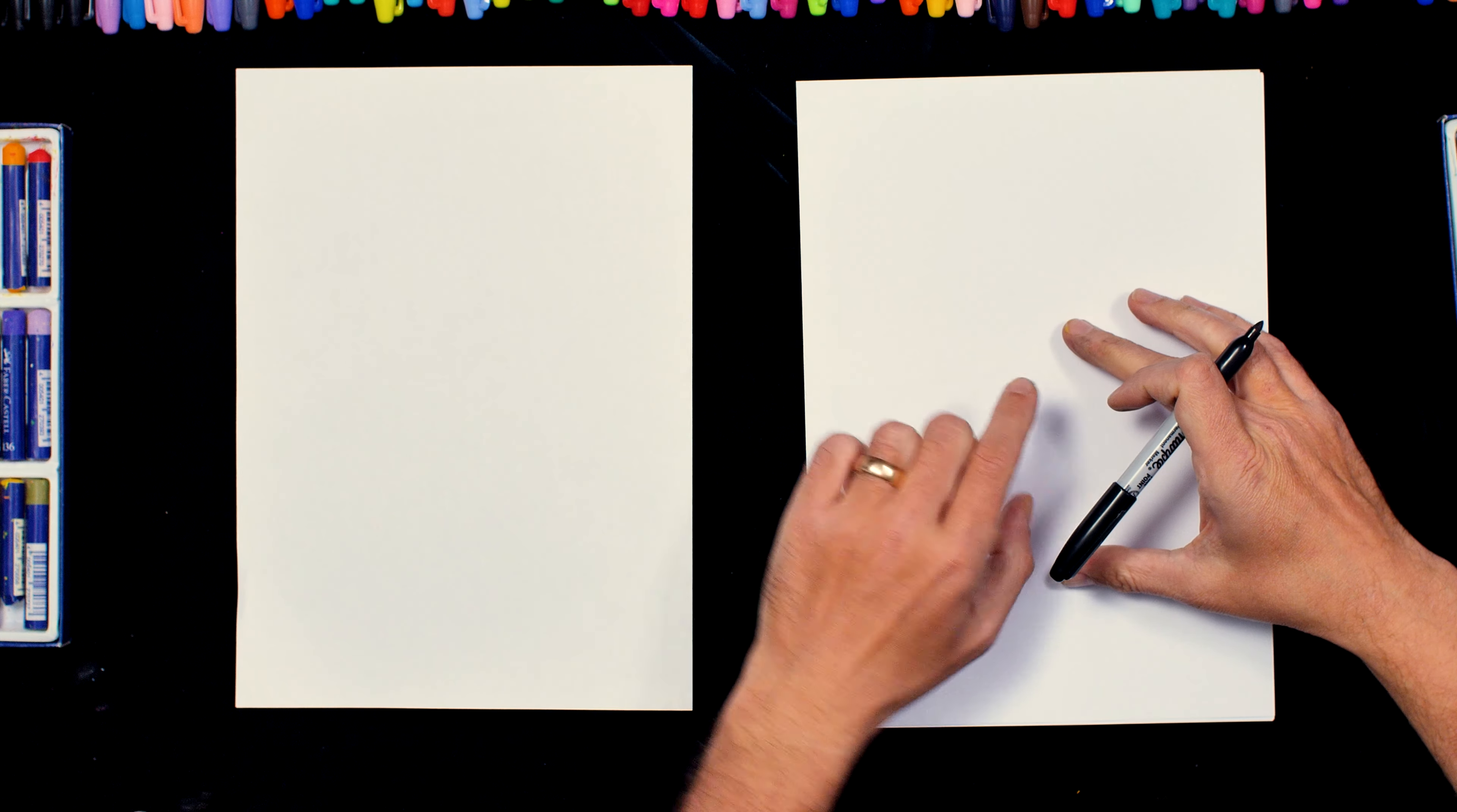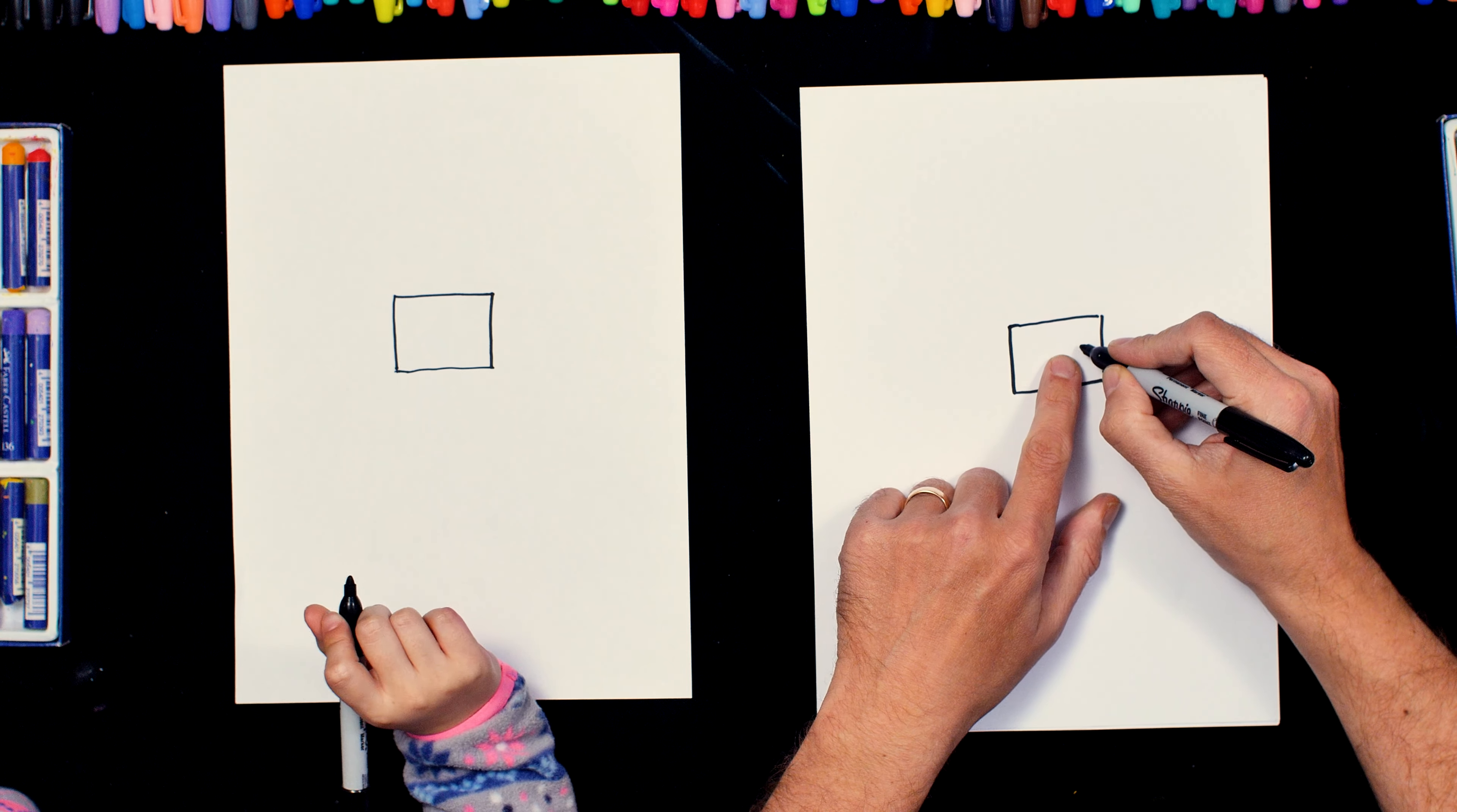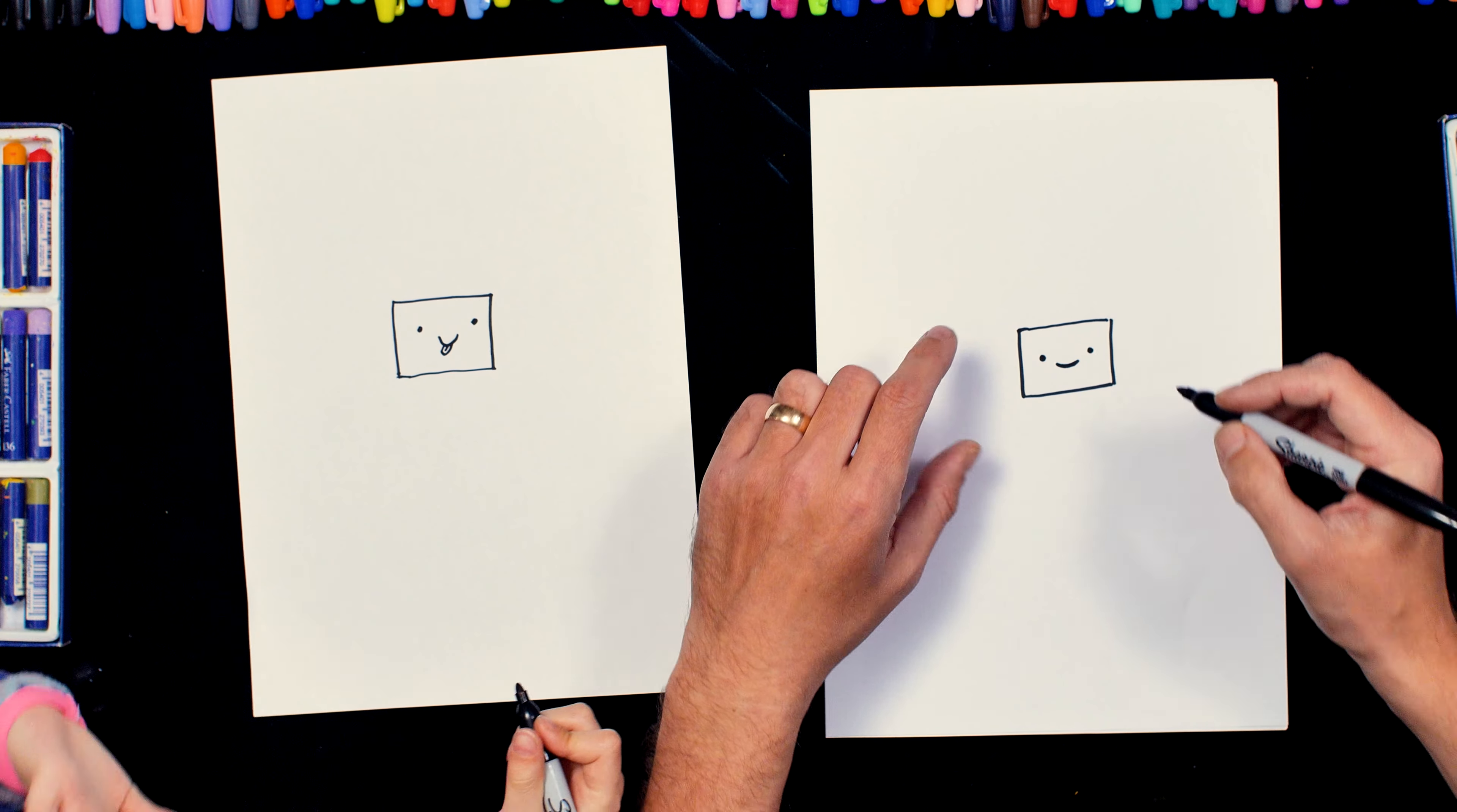So about here we're going to do a square, and that is BMO's face. I'm going to do a little dot there and another little dot there for his eyes. Look how small I'm doing there. And then we do a little tiny smiley mouth in between. I'm going to do it sticking his tongue out. Okay, you're sticking his tongue out on your one.